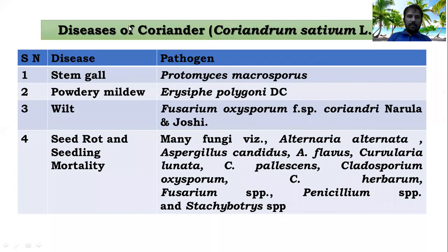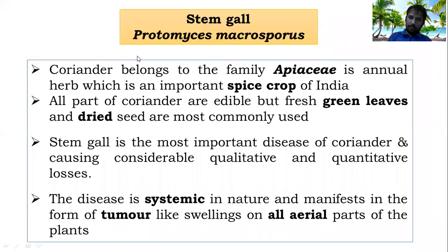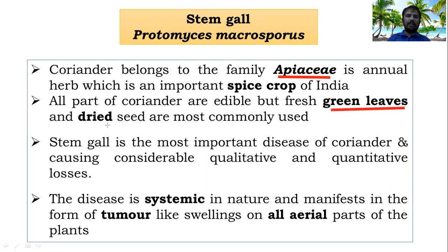Stem gall disease is in the syllabus. Coriander belongs to the Apiaceae family and is a spice crop. The whole coriander plant is edible, but mostly we use green leaves and dried seeds as spices. Stem gall disease generally causes loss in both quality and quantity. The disease is systemic in nature and affects all aerial parts except the fruit.